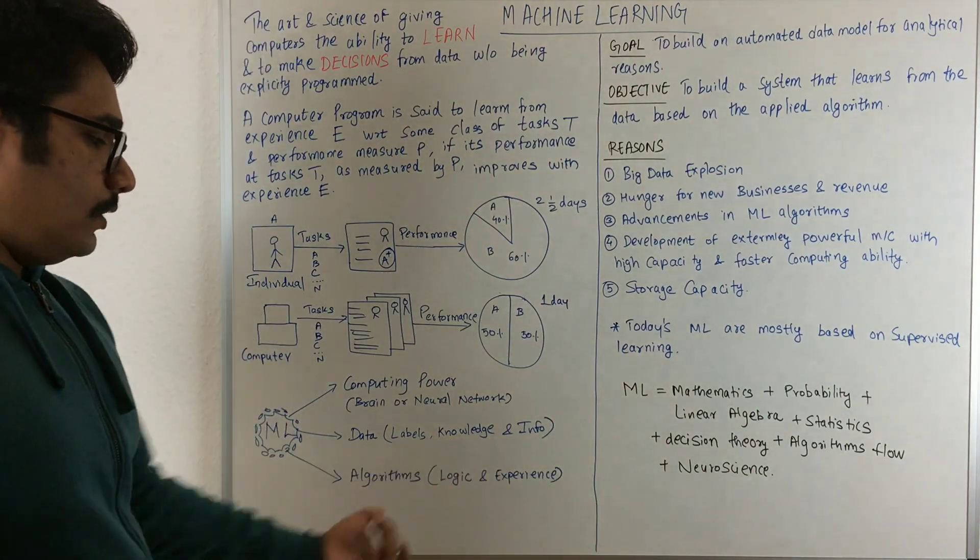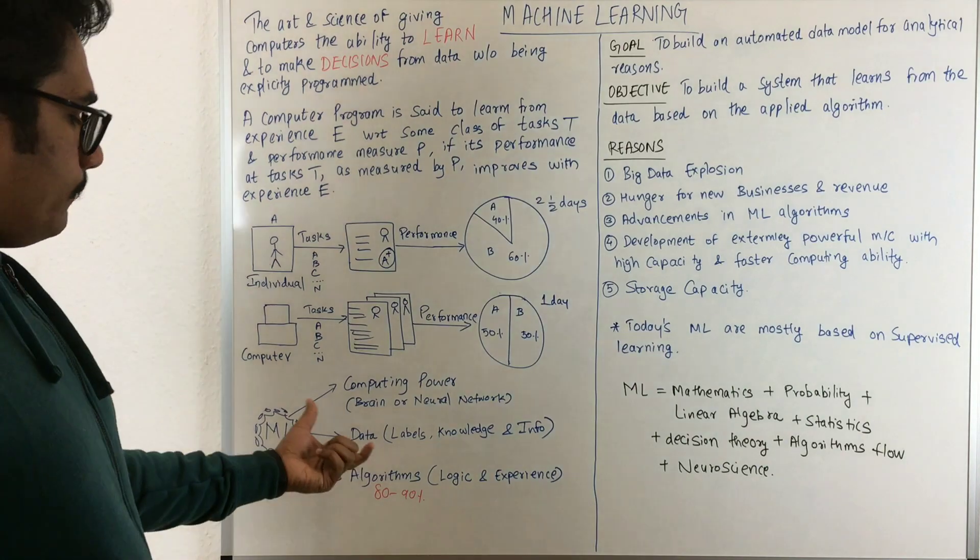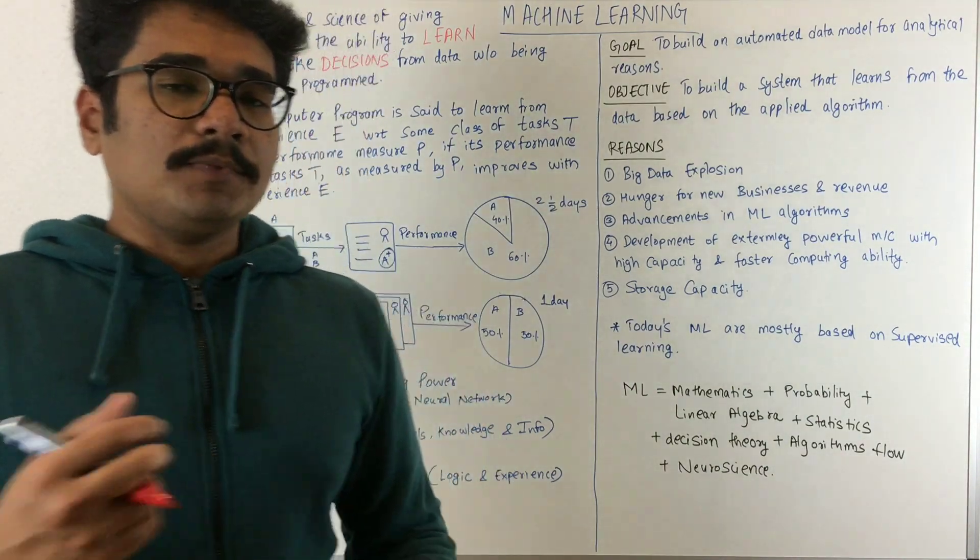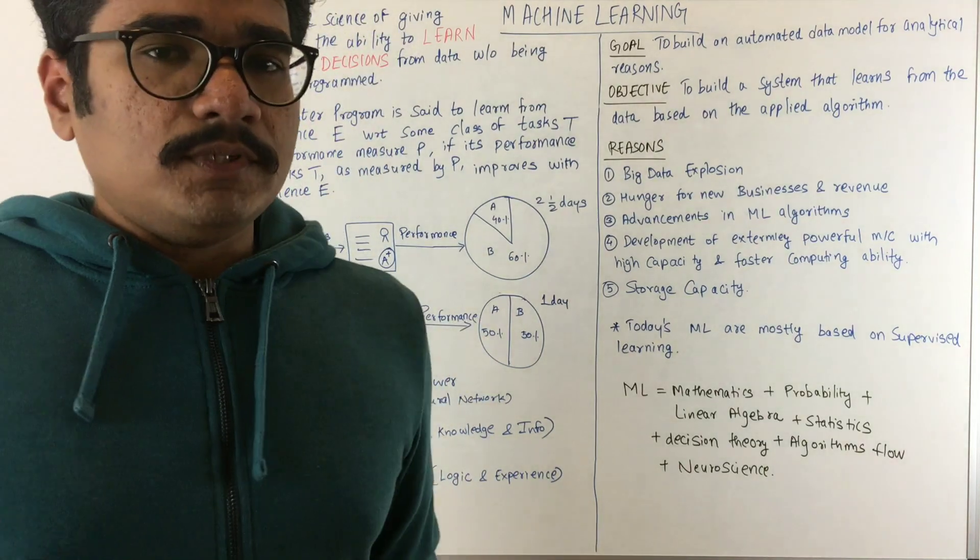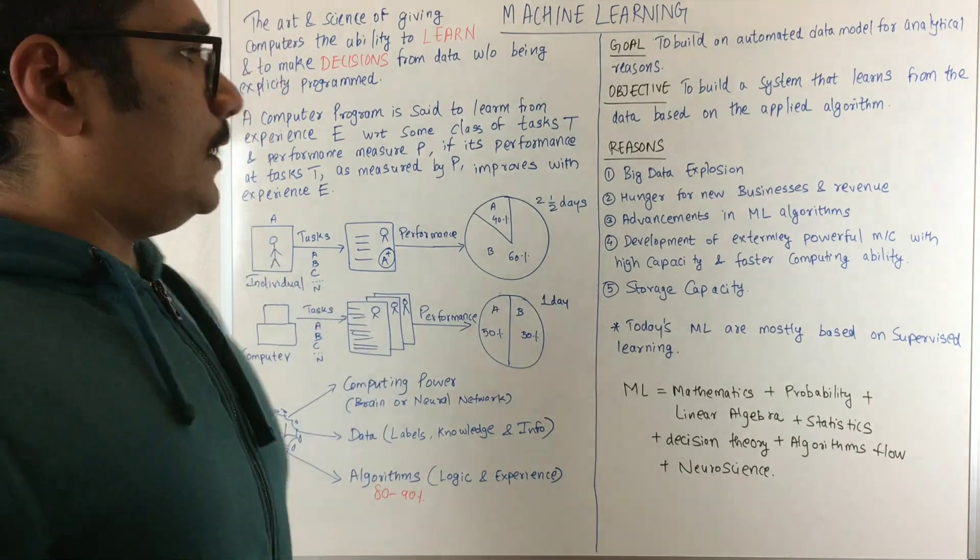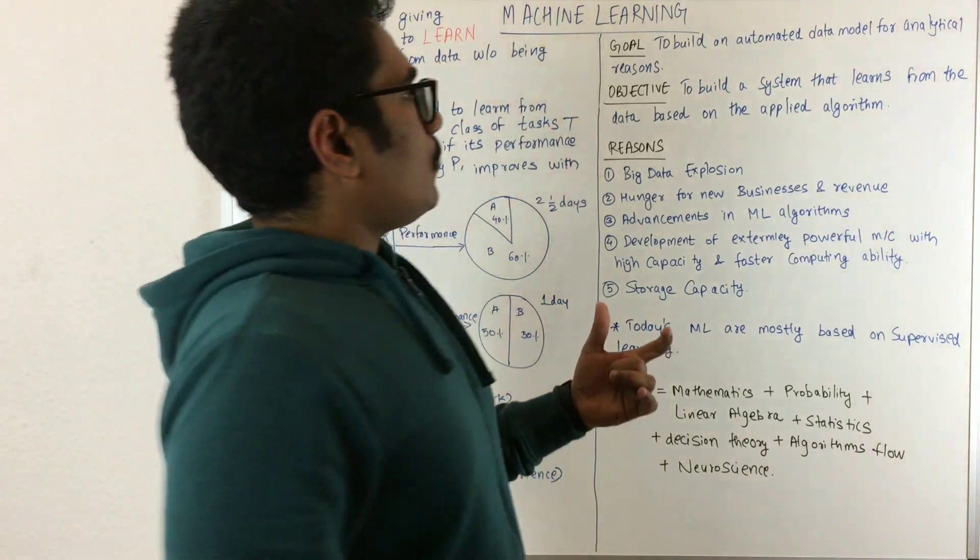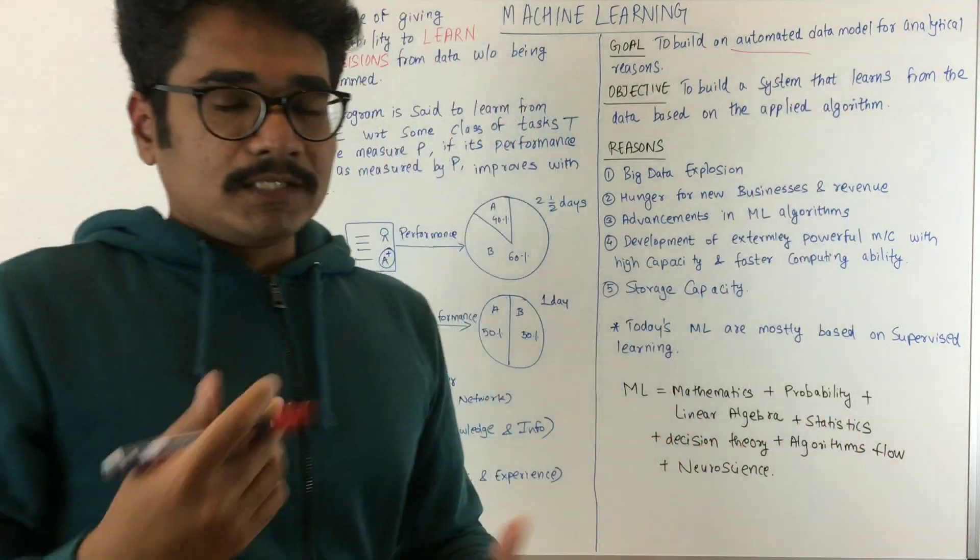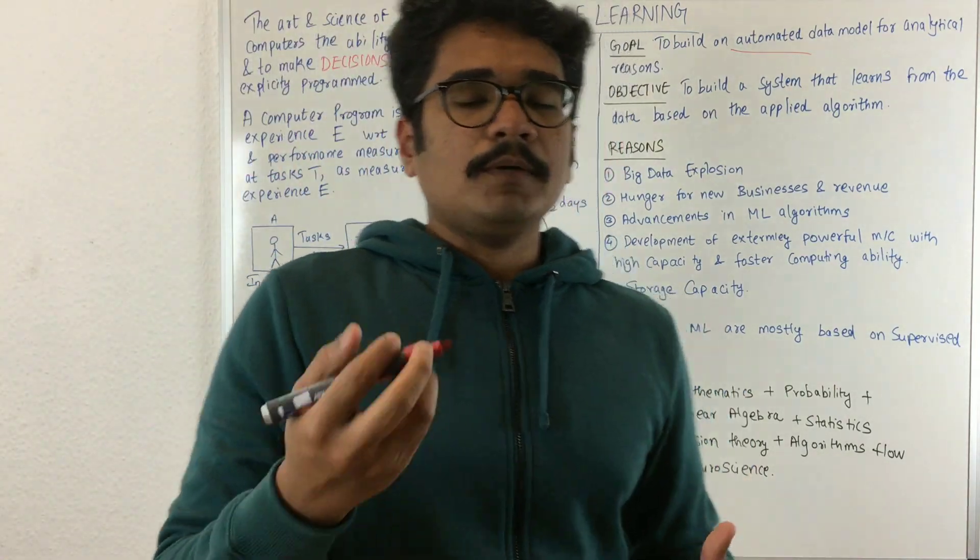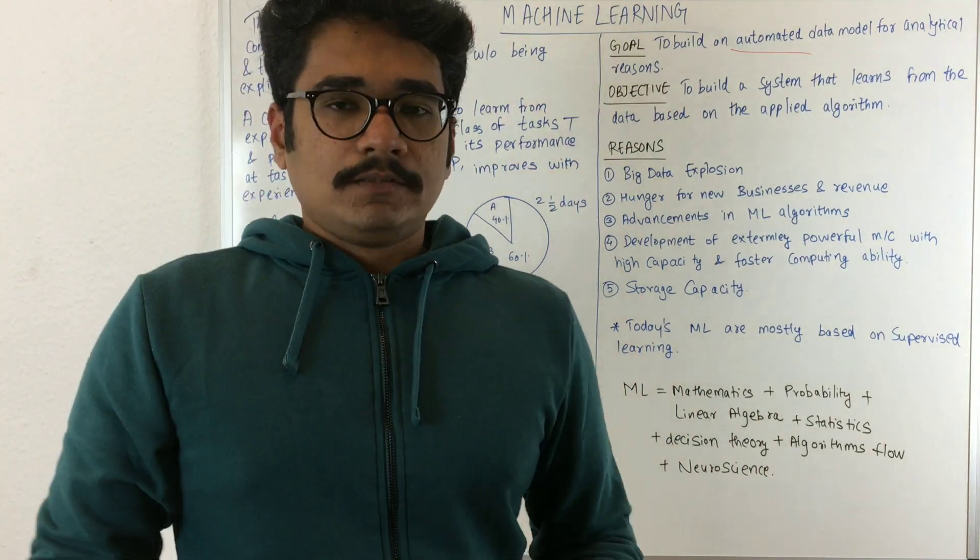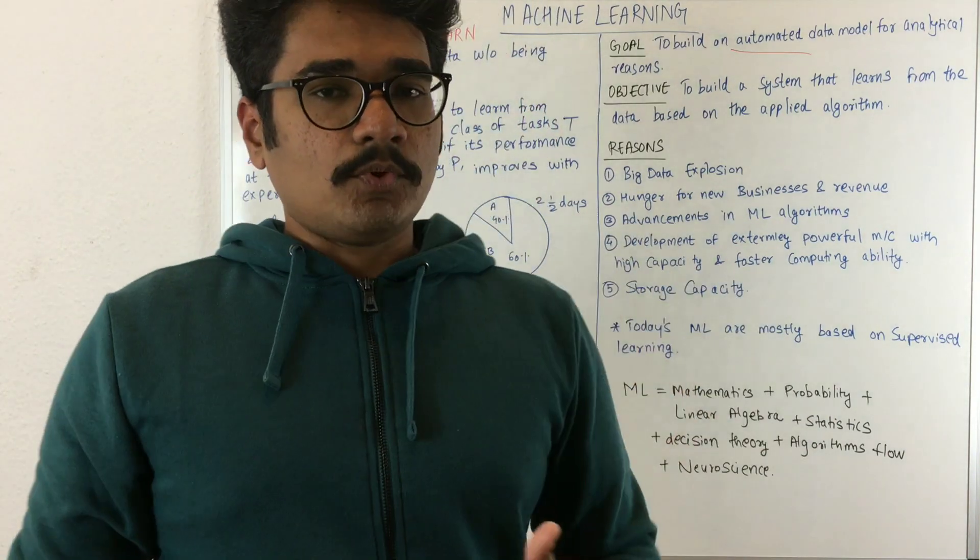You have certain algorithms. This algorithm should be the logic and experience you learn. Ideally, this algorithm should have 80 to 90% efficiency. Only then do you take it as a machine learning algorithm and implement it in your programs. Next, why we do this or what is the goal for machine learning.